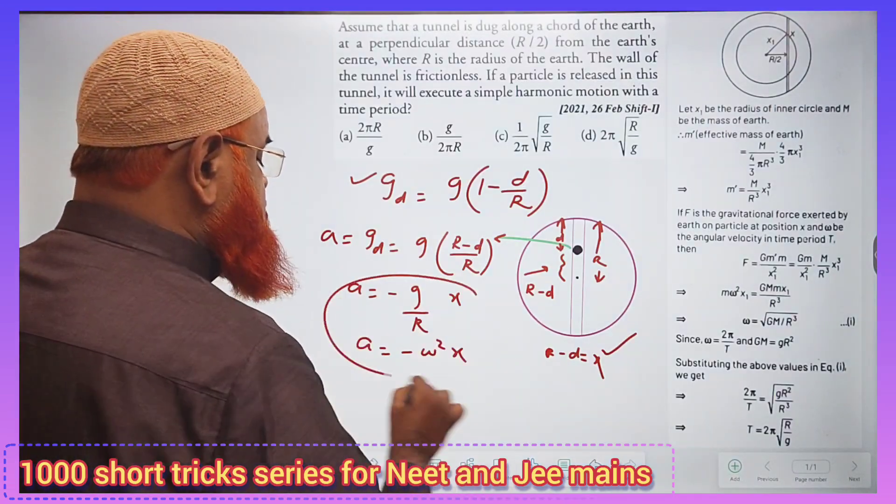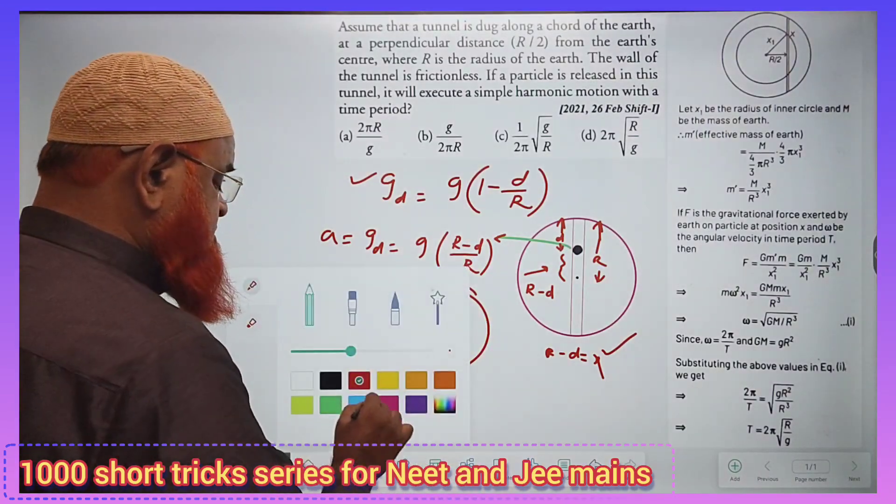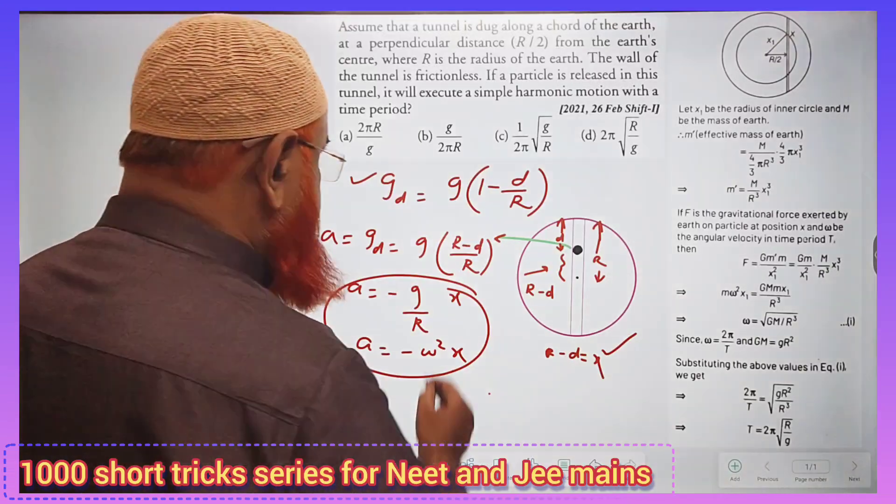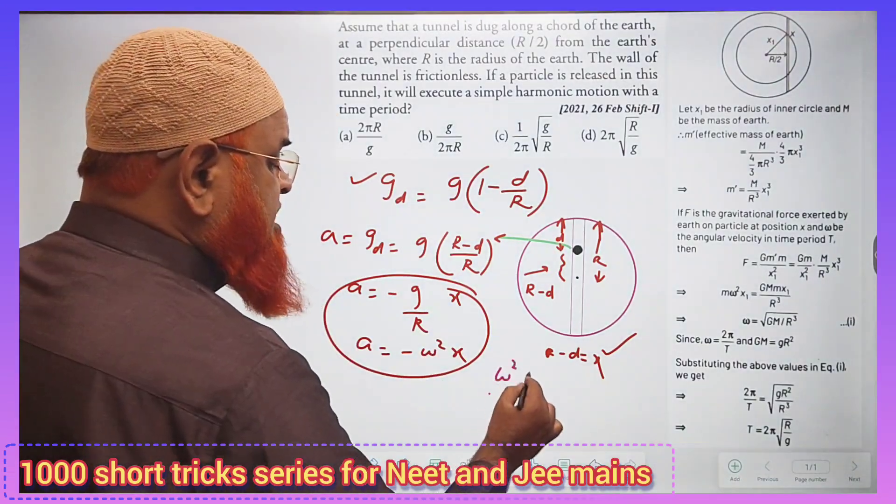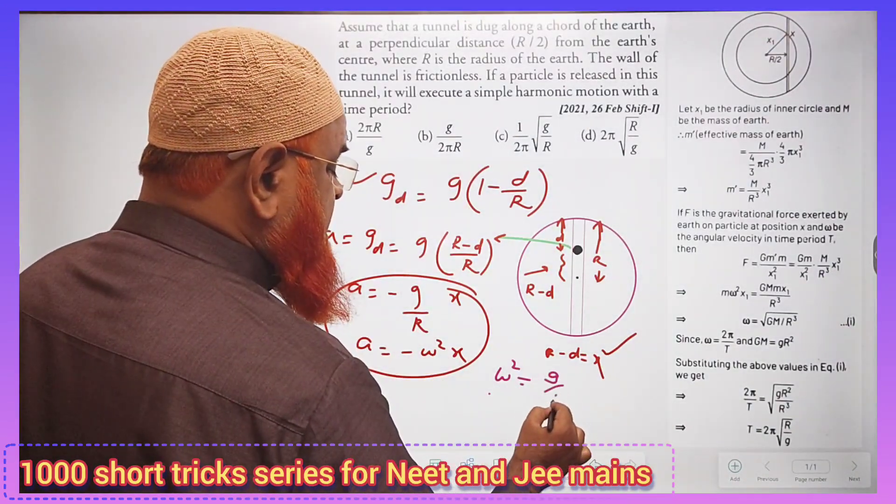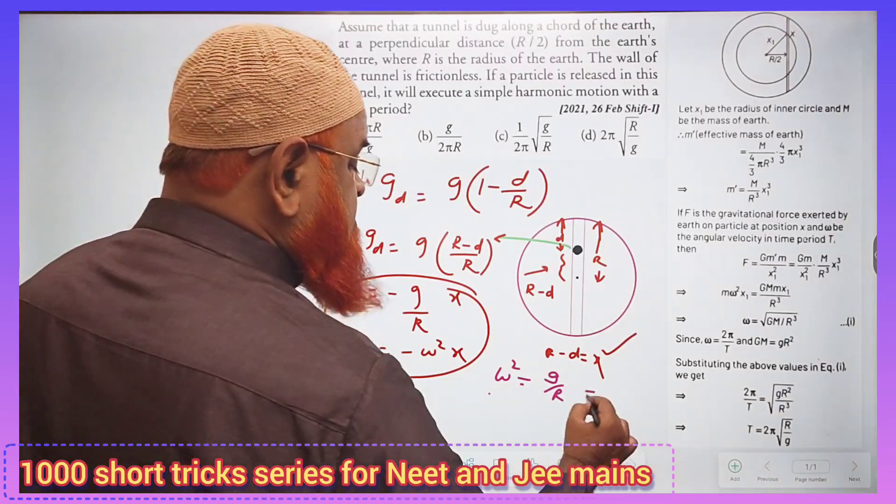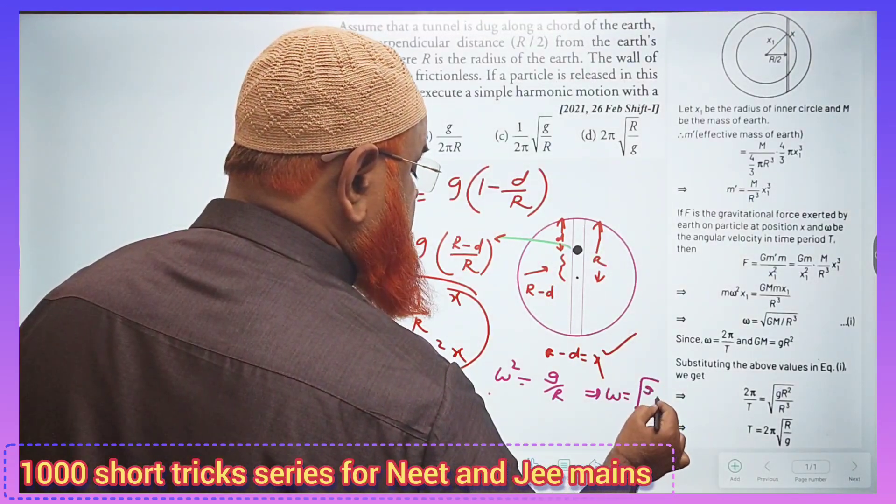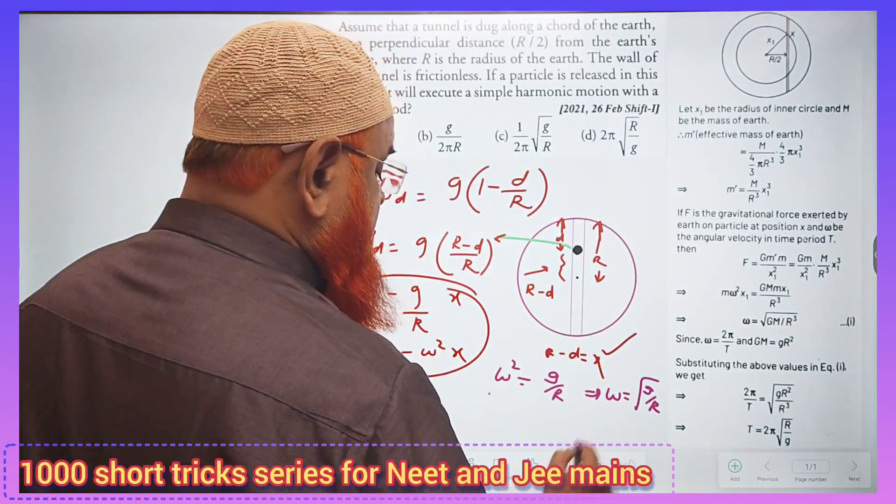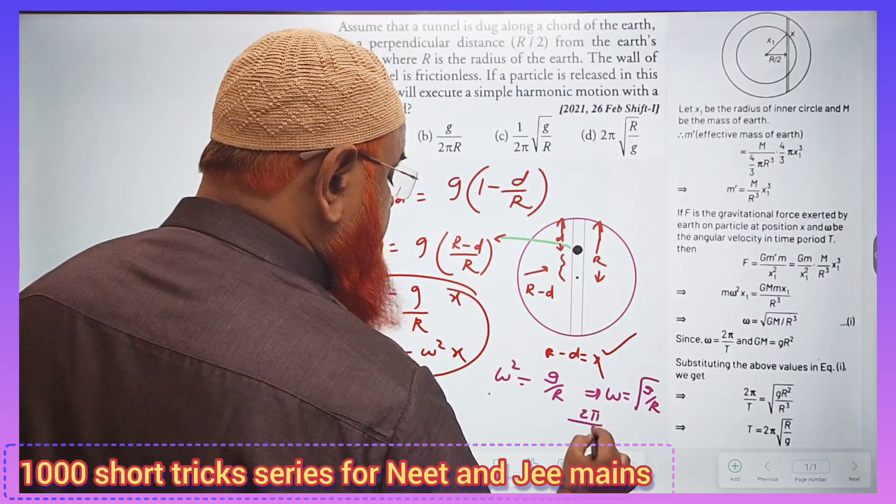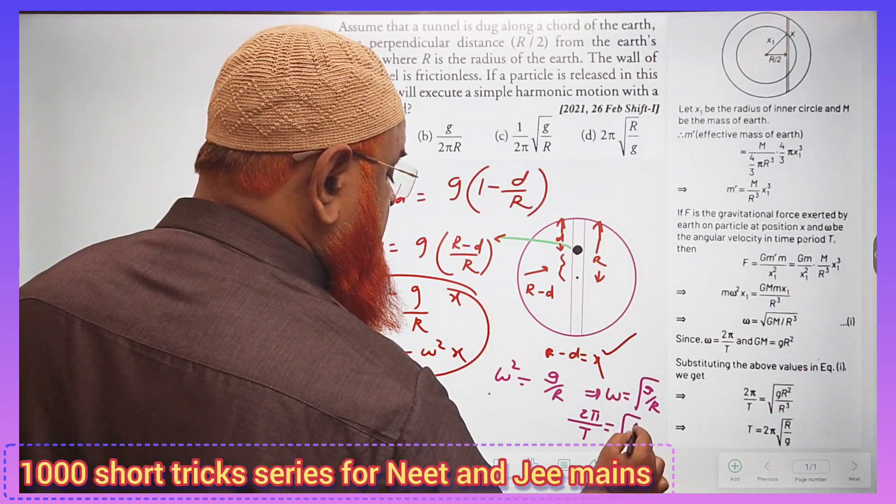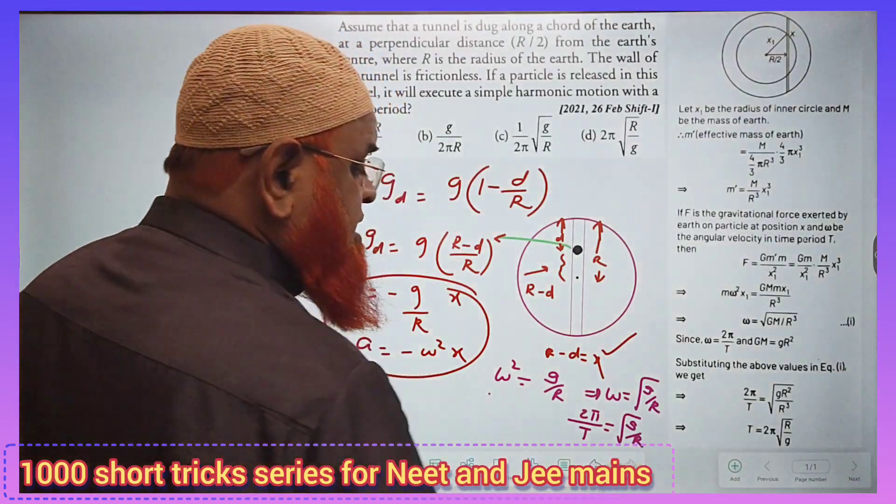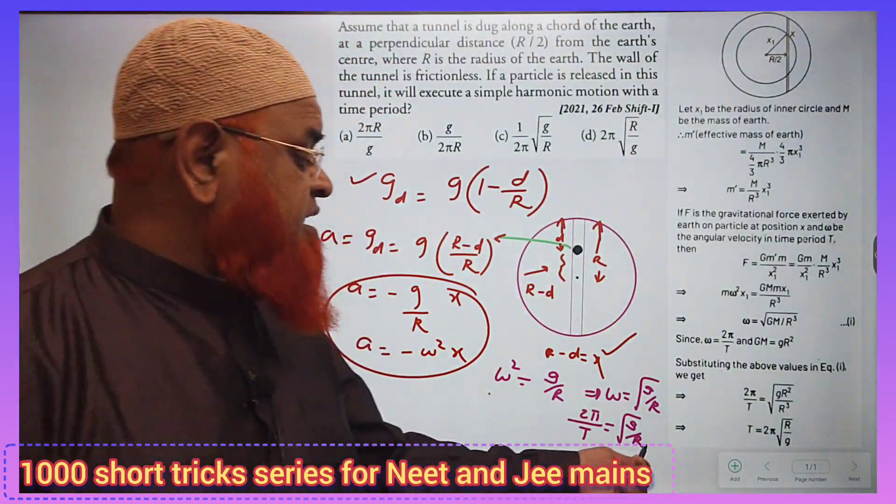If you compare these two, you will get omega squared equals g/R. This implies that omega equals square root of g/R. And you all know omega is nothing but 2π/T, which equals square root of g/R.